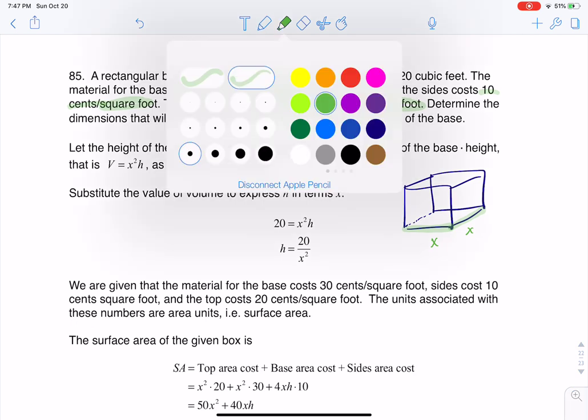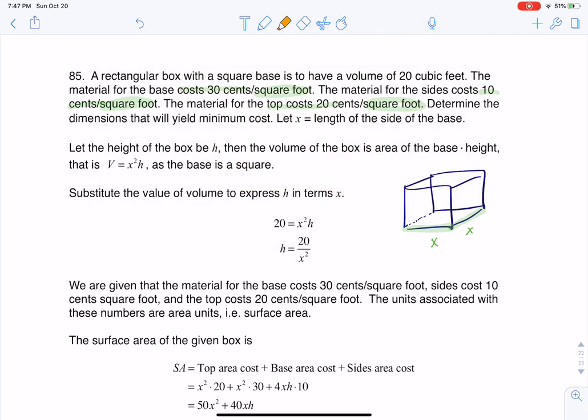But the height is a different dimension. We weren't told that the height was the same dimension as the box, so I will call that H. Let me color code this also.